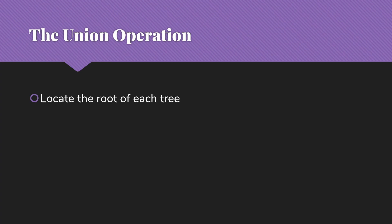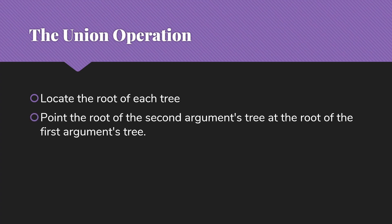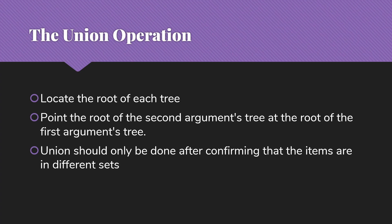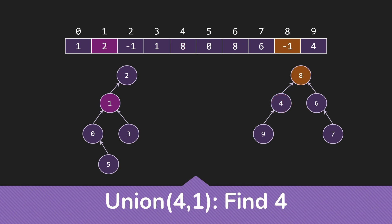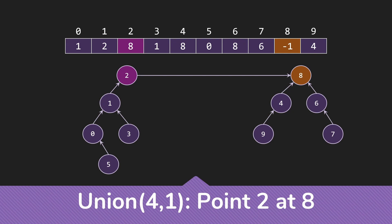The union operation is slightly more complex because we're trying to union two sets together. We always union two items: we first locate the roots of the trees for those items, then point the root of the second argument's tree at the root of the first argument's tree, turning them into one big tree. Union should only be done after confirming the items are in different sets — if we find the same root for both, we certainly don't want to point it at itself. Here's an example unioning 4 and 1: we find the root of 4, which is 8, then the root of 1, which is 2, and finally we point 2 at 8.